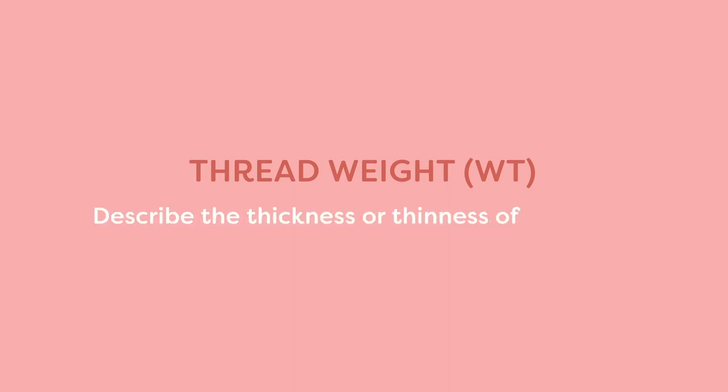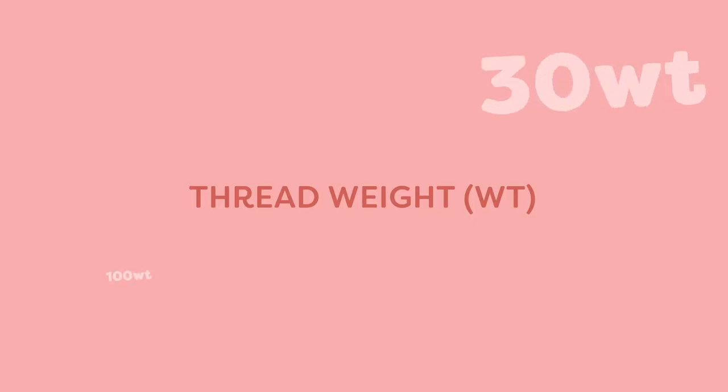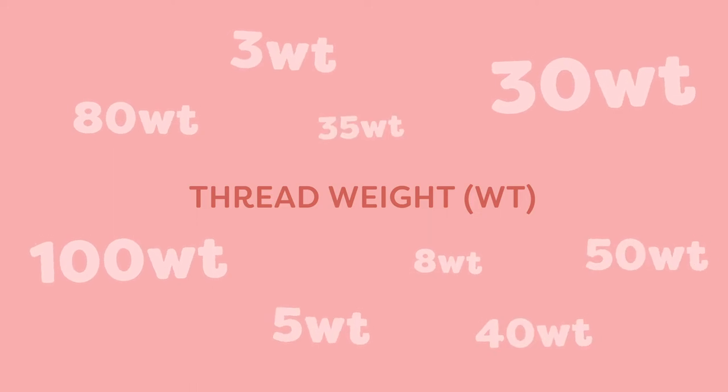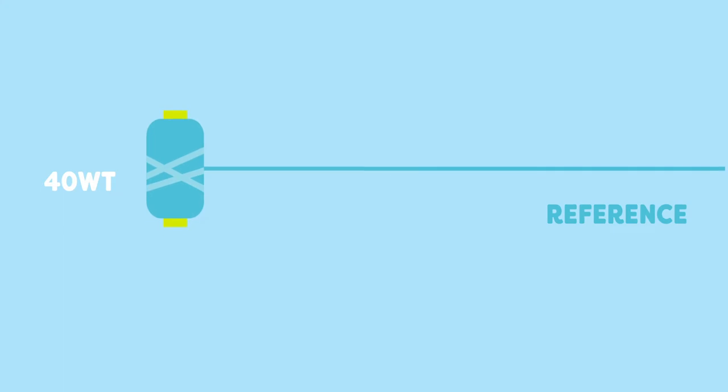Thread weight. The sewing industry uses thread weight to describe the thickness or thinness of a thread. For instance, a 100 weight thread will be super fine, while a 3 weight thread will be closer in thickness to yarn. While this term is used almost ubiquitously by sewing companies, there isn't really a definitive system to measure it. Most manufacturers know how thick a 40 weight thread looks like, and will use that as a reference point to base other thread weights on.